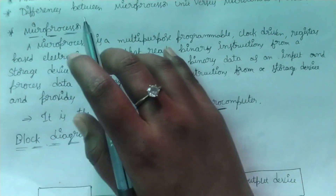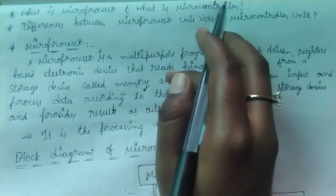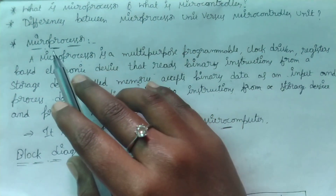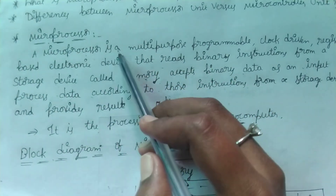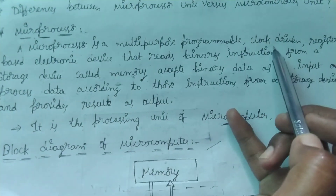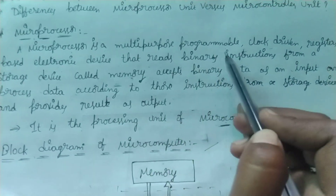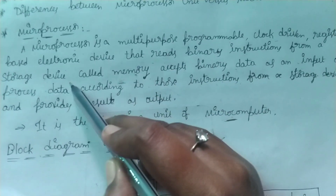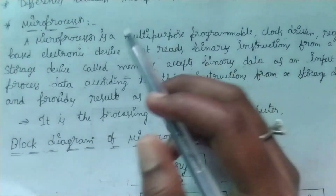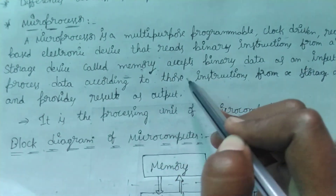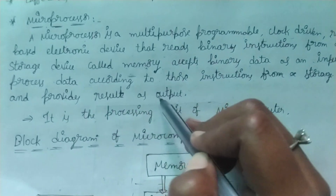In this lecture, our topic is what is microprocessor and what is microcontroller. First of all, I would like to explain about microprocessor. A microprocessor is a multi-purpose, programmable, clock-driven, register-based electronic device that reads binary instructions from a storage device called memory and accepts binary data as input and processes data according to those instructions and provides results as output.